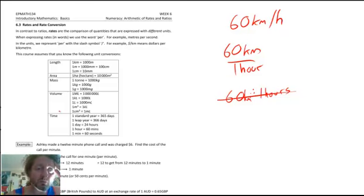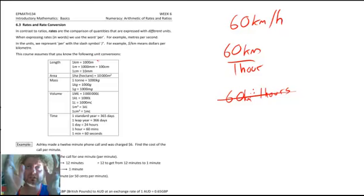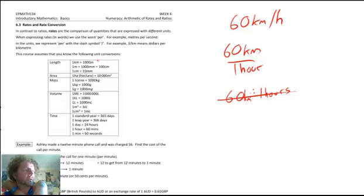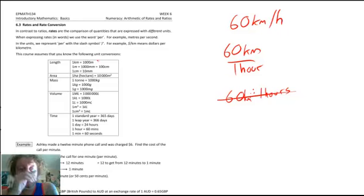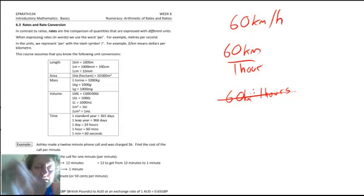One kilometre is a thousand metres. One metre is a thousand millimetres, because milli is a thousandth — a millimetre is literally a thousandth of a metre. There are 100 centimetres in a metre, because centi means a hundredth — a centimetre is a hundredth of a metre.